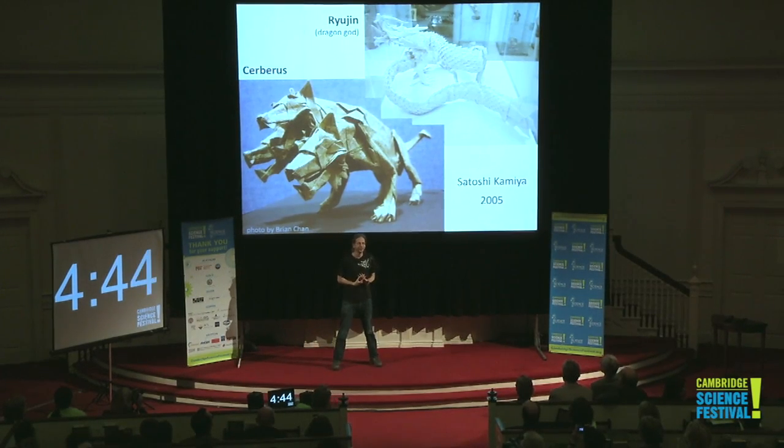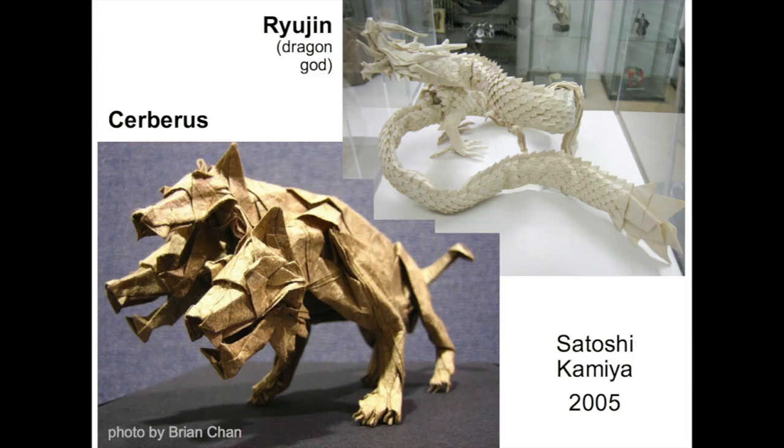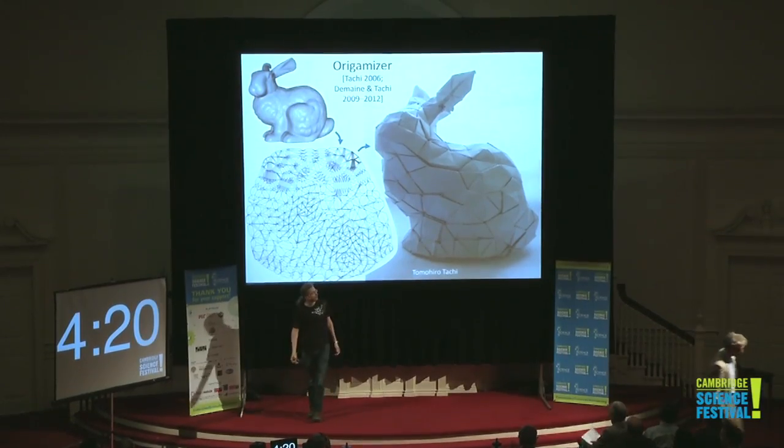I am a computer scientist and an artist and I like to use origami as a kind of platform to explore both sides. Here are two examples of the state-of-the-art in paper folding — they're now seven years old, but these are each folded from one square piece of paper, no cuts. These are designed in part using mathematics; this would not be possible without our mathematical understanding of origami.